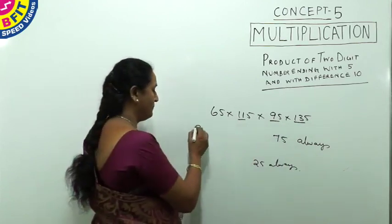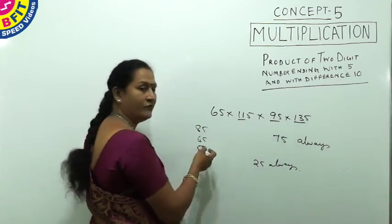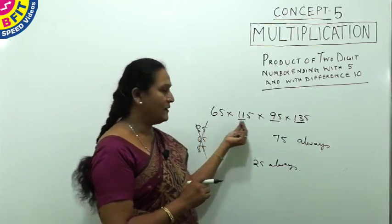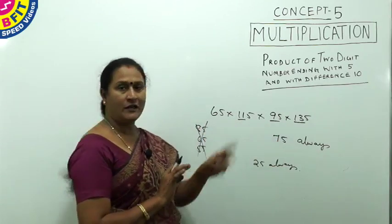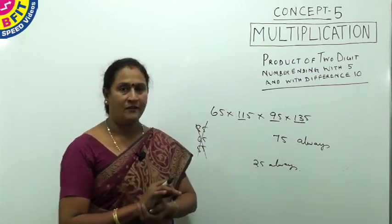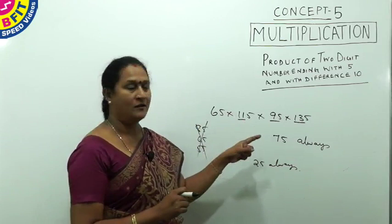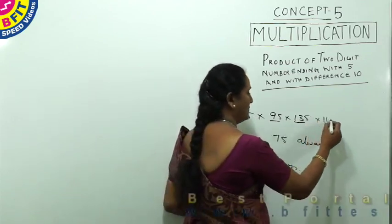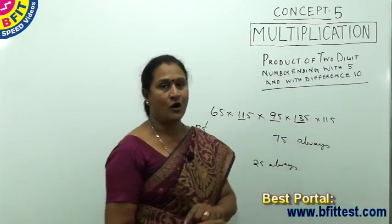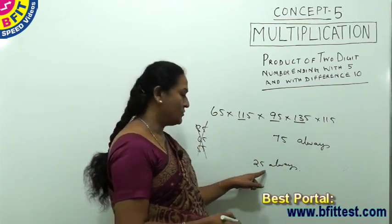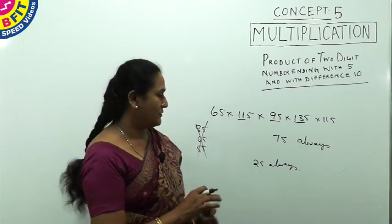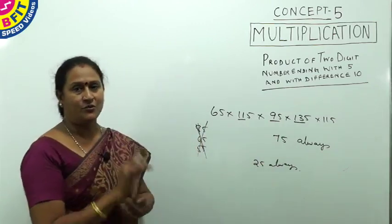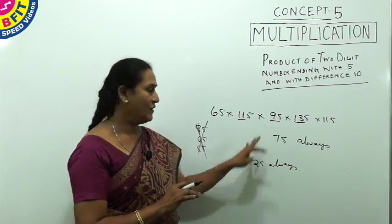When multiplying numbers ending with 5, the last two digits will only ever be 25 or 75 — no other value like 85, 65, 55, or 45 is possible. When all digits before 5 are even, last two digits are 25. When the number of odd digits before 5 is odd, last two digits are 75. For example, if there are four odd numbers, that's an even count, so last two digits are 25.